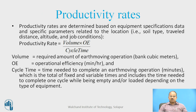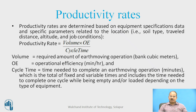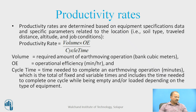Productivity rates are determined based on equipment specifications, data, and specific parameters related to location. The formula is: Productivity Rate = Volume × Operational Efficiency / Cycle Time. Volume is the required amount of earth moving in cubic meters, operational efficiency is in minutes per hour, and cycle time is the total of fixed and variable time needed to complete one cycle — both empty and loaded.